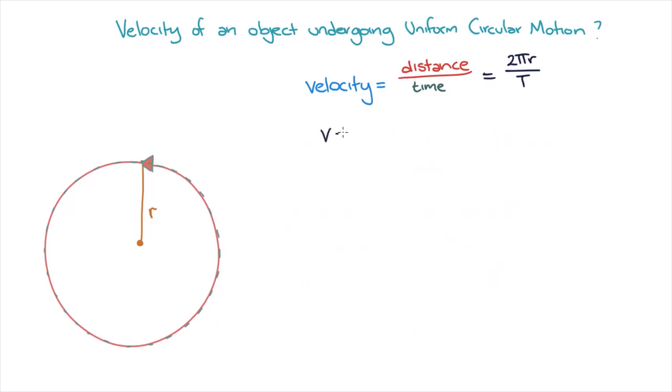Now we know the magnitude of velocity — what is the direction of the velocity vector? We know that an object undergoing uniform circular motion is travelling along the circumference of a circle. To undergo this motion, the velocity vector of the object must be tangential to the circle at every point.